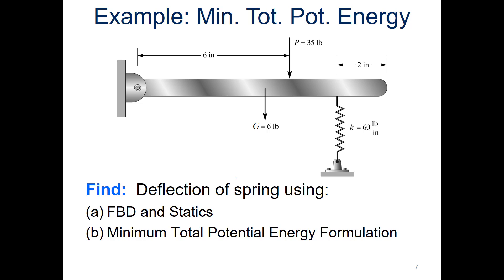Here's an example with a bar. We've got six inches over until we have some force being applied — 35 pounds — and a six pound force at two inches in. At the end of our rod, the spring constant k is 60 pounds per inch. We want to figure out how far this spring is deflected. We're going to do that via FBD and statics, and then apply the minimum total potential energy formulation to see how the two compare.